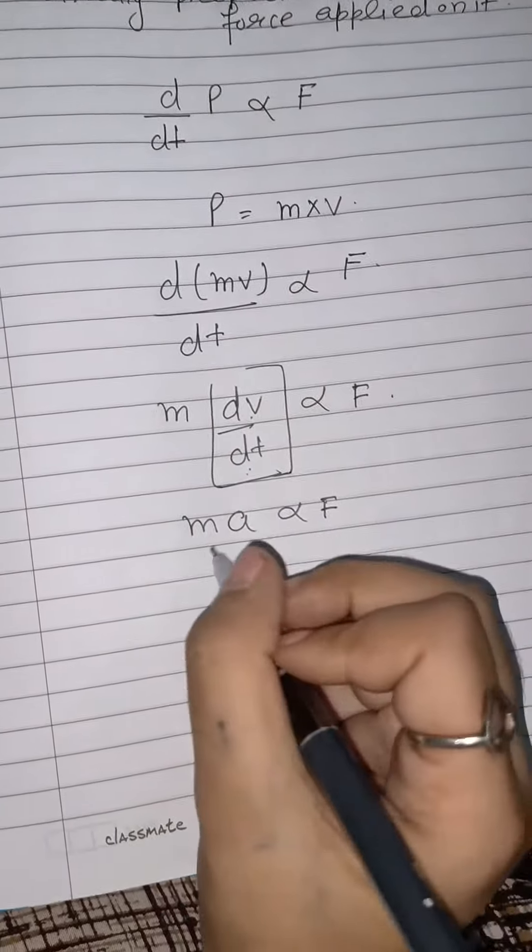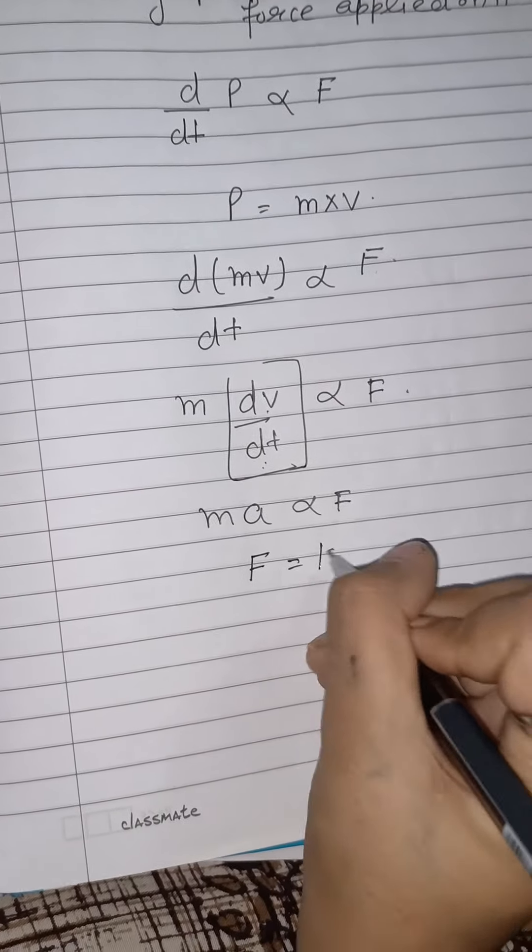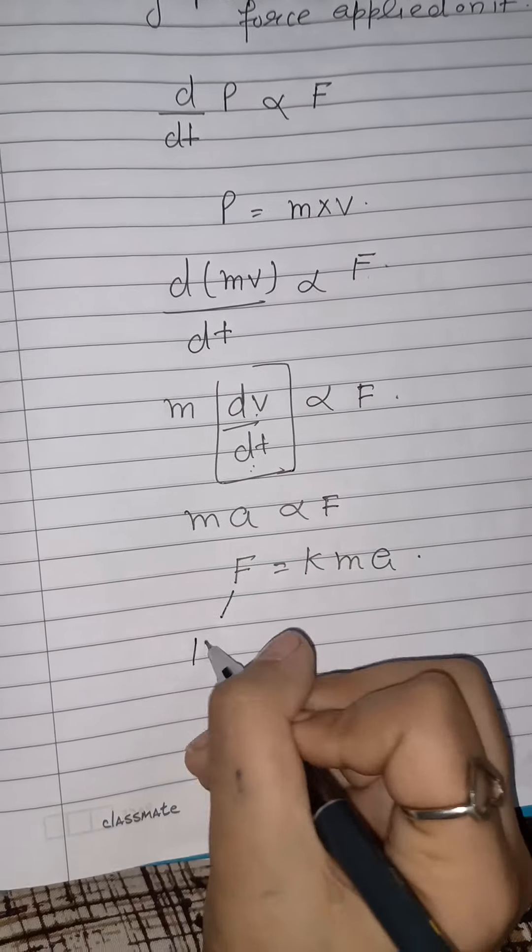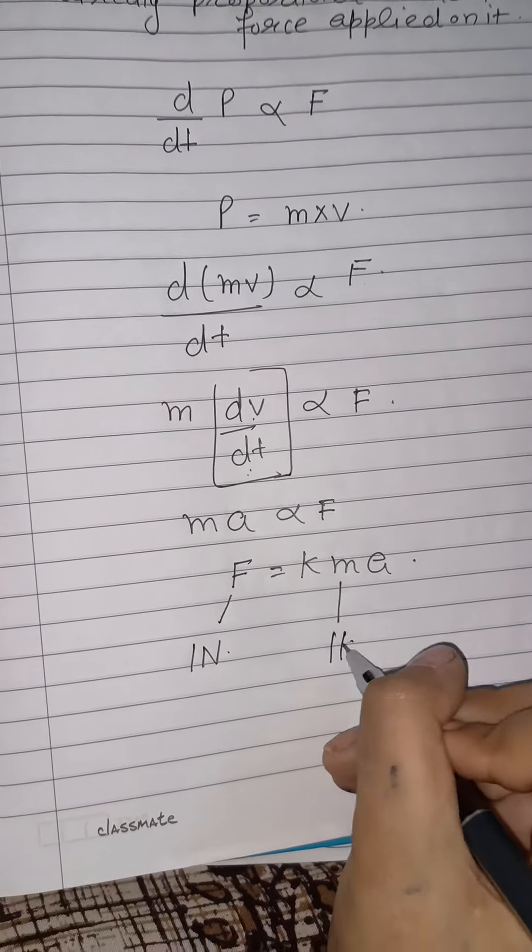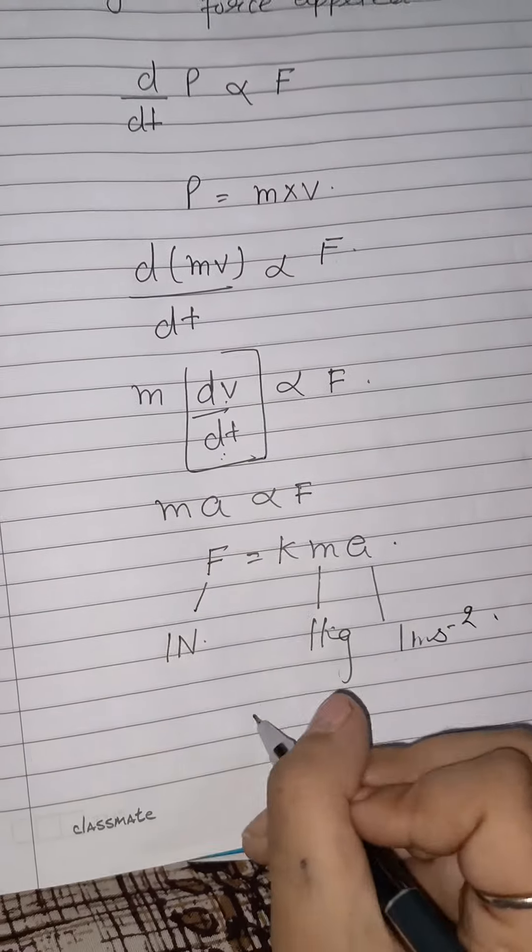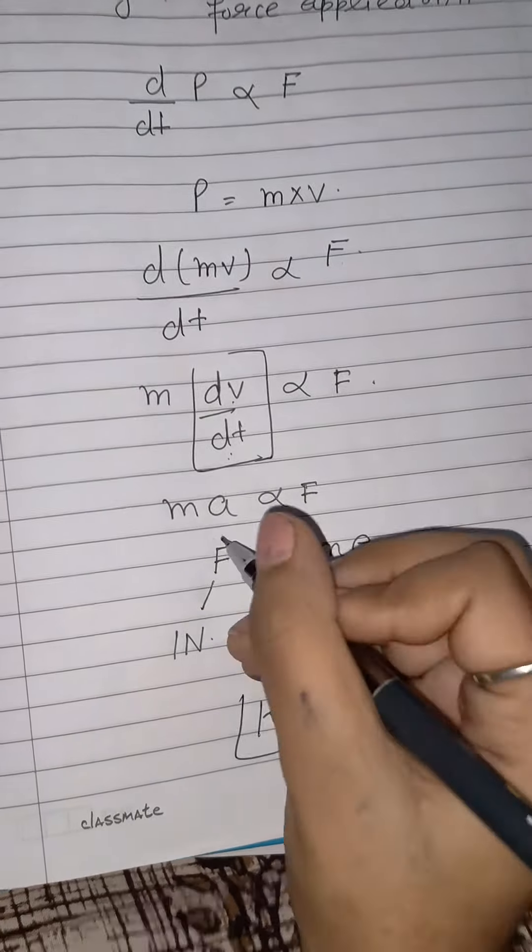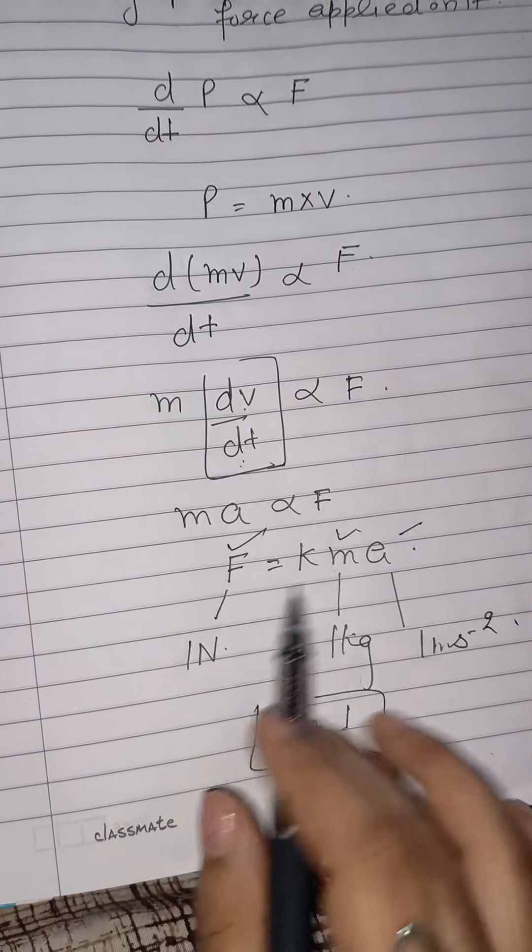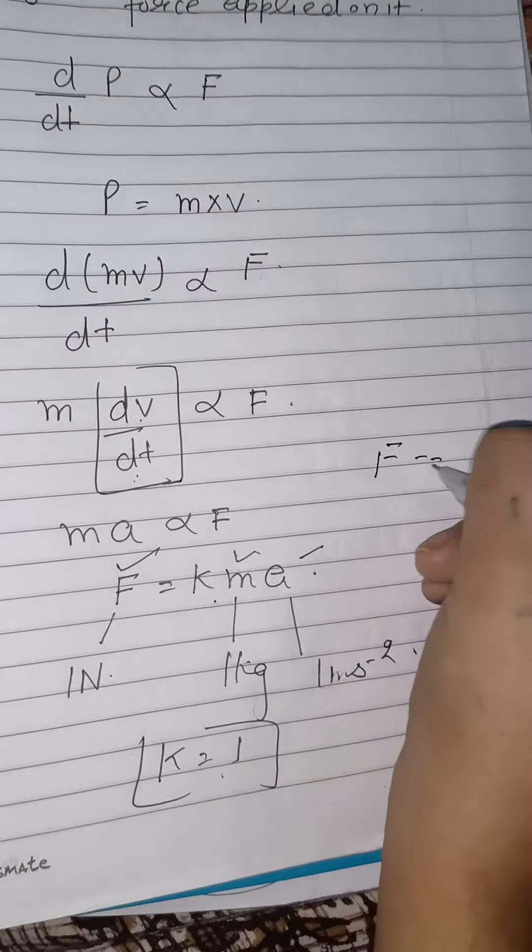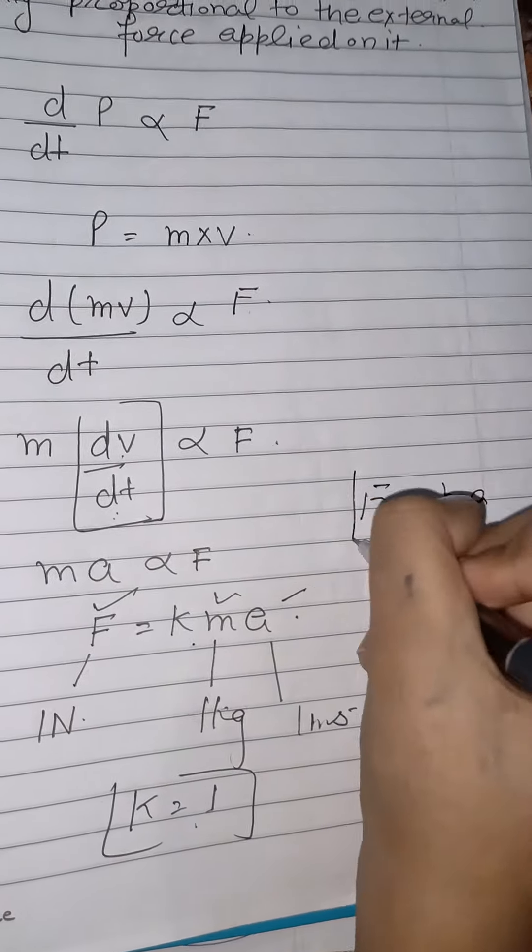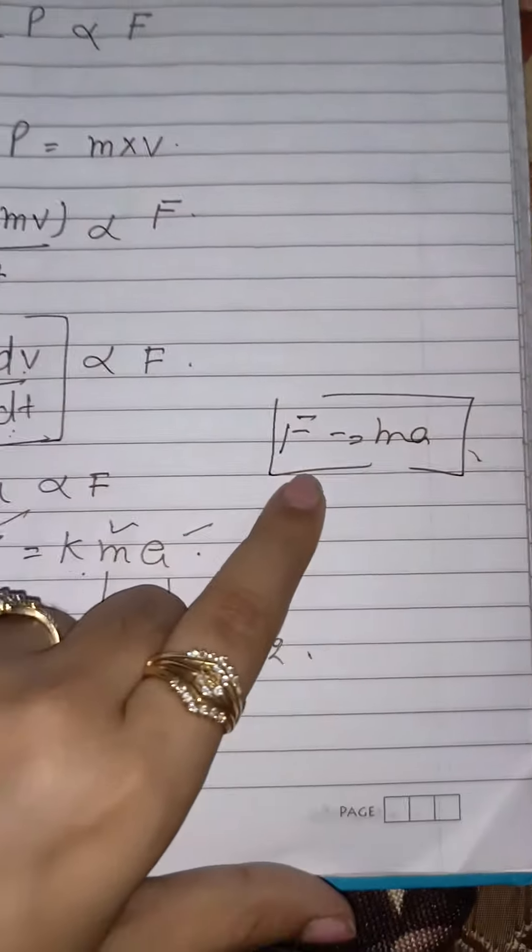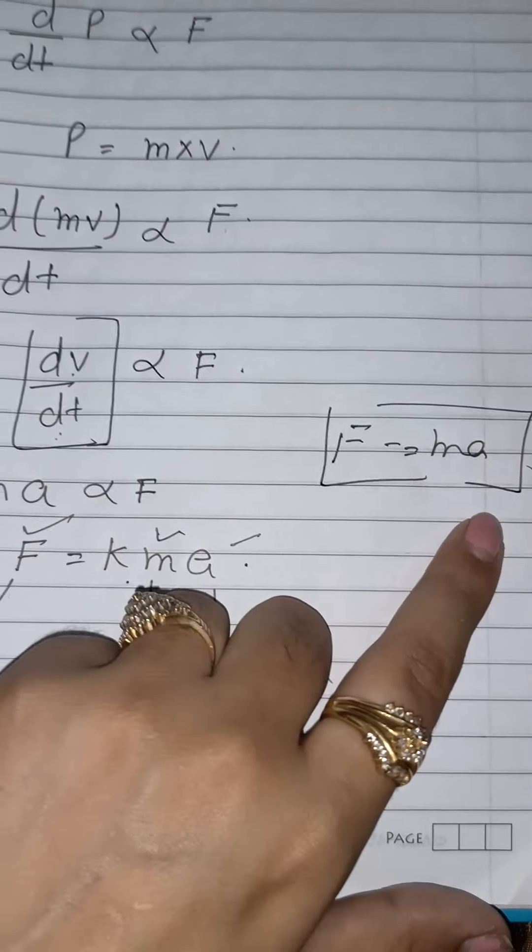So when we have a proportionality sign, we put a constant. F is equal to k m a. If the force is 1 newton and mass is 1 kg and the acceleration is 1 meter per second squared, then the value of k is 1. So if we put k value here then we have the expression F is equal to m a, that is the main expression of Newton's second law of motion which shows the relation between force and acceleration.